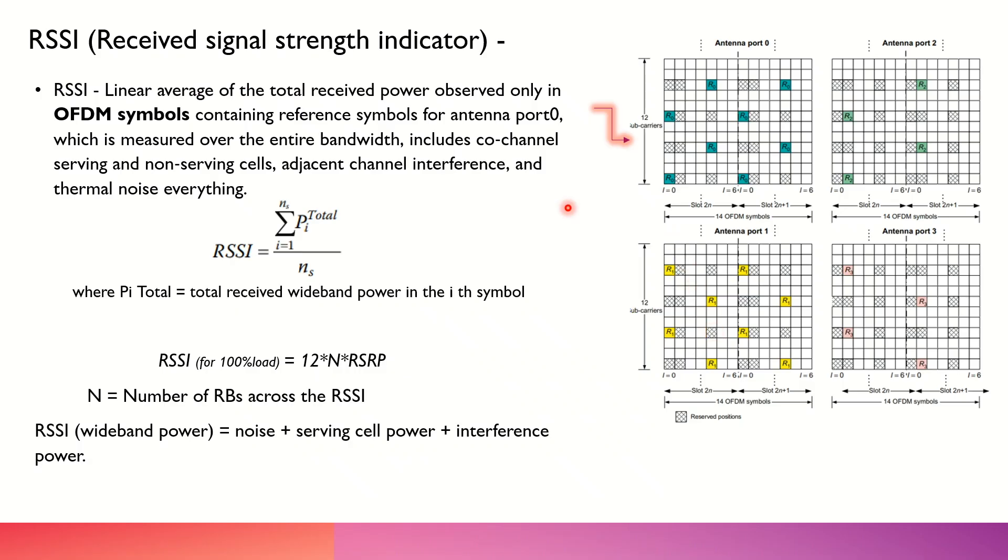Because if we have certain adjacent signals or channels which are coming from the neighboring cells, if their power is very high, if they are over transmitting or if they are overlapping with the serving cell, that would be considered as an interference. And here, by the means of RSSI, we can actually estimate that.